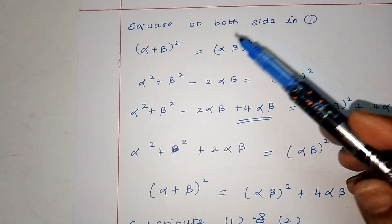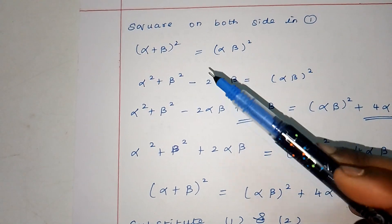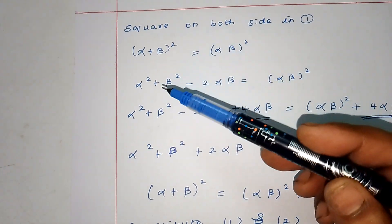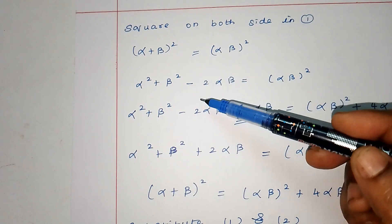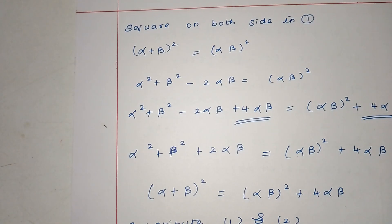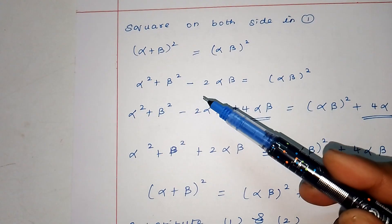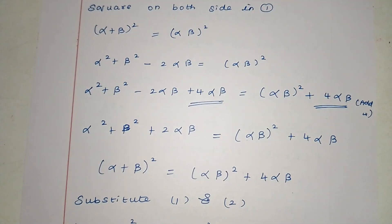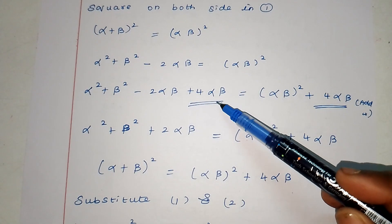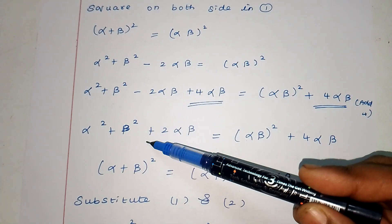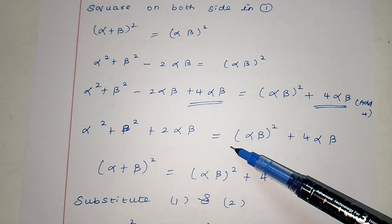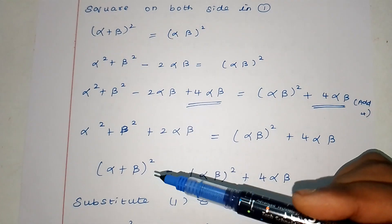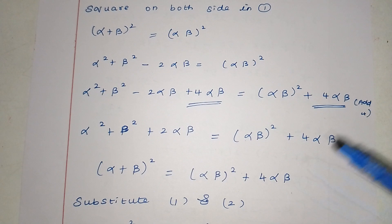Now, square both sides of the first equation. Alpha minus beta whole squared equals alpha into beta. Expanding: alpha² plus beta² minus 2·alpha·beta equals alpha·beta. Adding 4·alpha·beta to both sides: alpha² plus beta² plus 2·alpha·beta equals (alpha·beta)² plus 4·alpha·beta. So, (alpha plus beta)² equals (alpha·beta)² plus 4·alpha·beta.